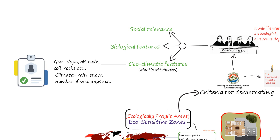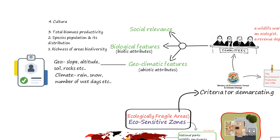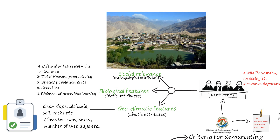The second category is biological features, which falls under the biotic attribute. The following components have to be considered: the richness of the concerned area's biodiversity, population size and distribution of species, total biomass productivity, and any cultural or historical value of the area. The third category is social relevance, which includes cultural, economic and historical importance of the area — falling under anthropological attributes. It is important to consider the interest of civil society and local bodies, especially the Zilla, Taluk and Gram Panchayats. Local area communities are good at identifying ecologically and environmentally sensitive areas. These are the three broad categories the committee must consider before suggesting the best methods to manage eco-sensitive zones.